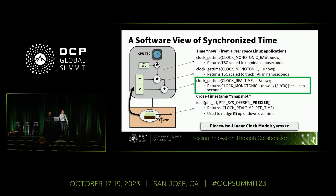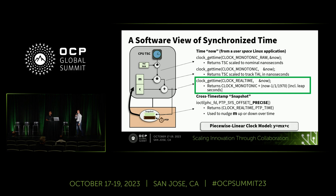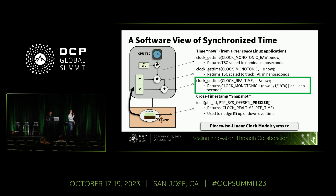Once you have the system able to bring time into the NIC and into your system, how do you use it? You use your standard POSIX clock_gettime calls — clock_realtime. The great thing is that once you have a system enabled with PTM, you as an application programmer are able to get this precision essentially for free, as long as you're using a new enough Linux kernel and something like a new enough version of PTP4L and PHC to SYS.